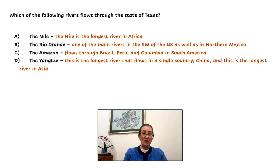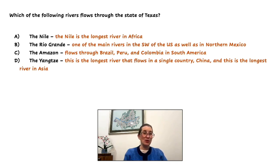Which of the following rivers flows through the state of Texas? A, the Nile. B, the Rio Grande. C, the Amazon. Or D, the Yangtze.